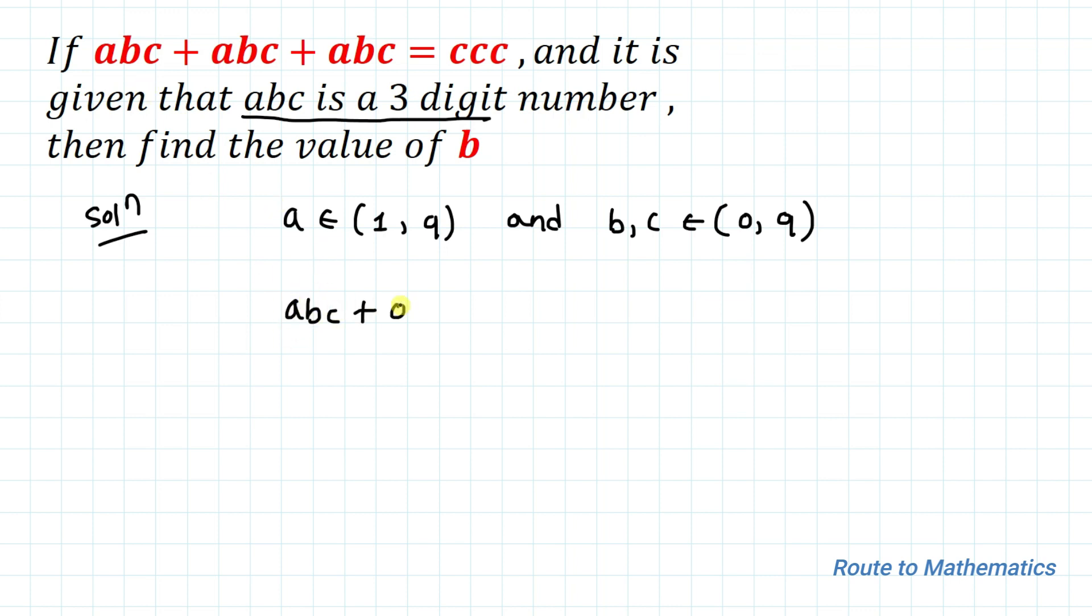This implies that we can write 3ABC equals CCC. Since ABC is a 3-digit number, we can write 3 multiplied with 100A plus 10B plus C equals similarly CCC as 100C plus 10C plus C.